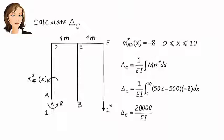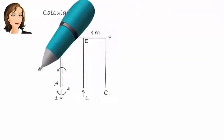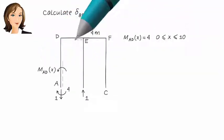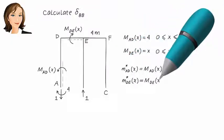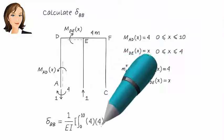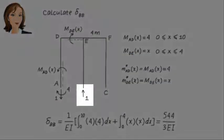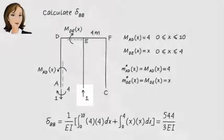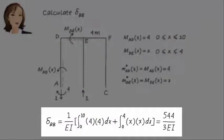We have four more displacements to calculate. First, let's determine delta BB — the vertical displacement at B due to a vertical unit load applied at B. Since the unit load and the virtual unit load are applied at the same point and in the same direction, M and M star are going to be the same. Here are the non-zero moment equations, and here is delta BB.